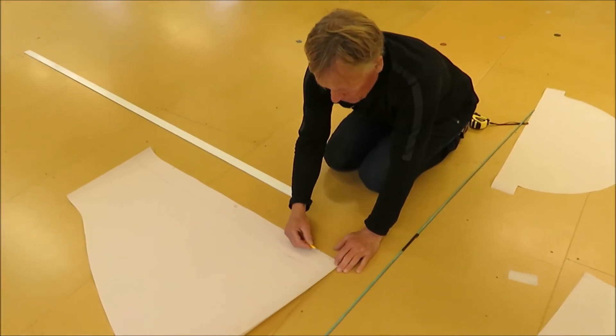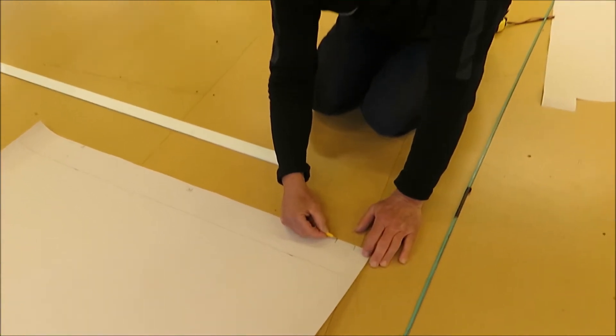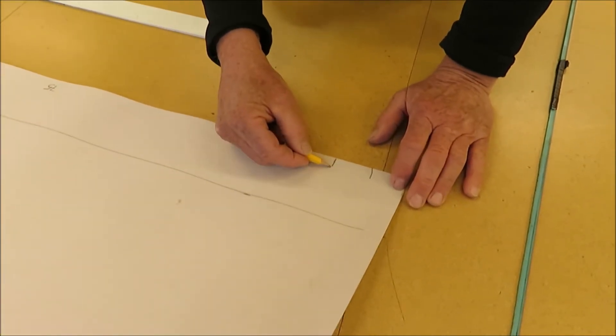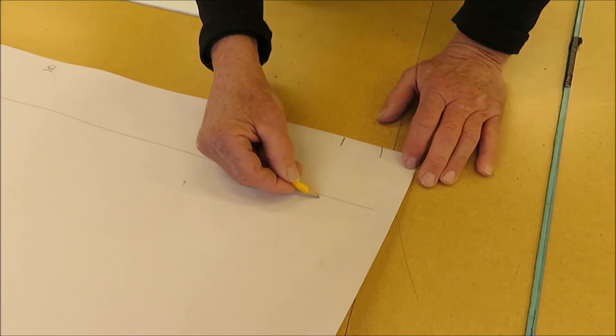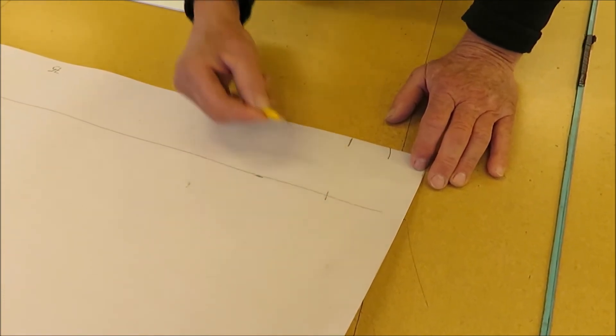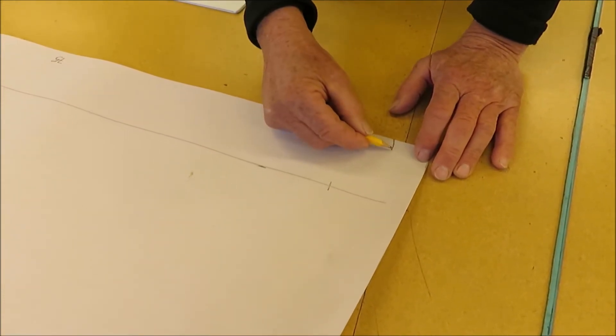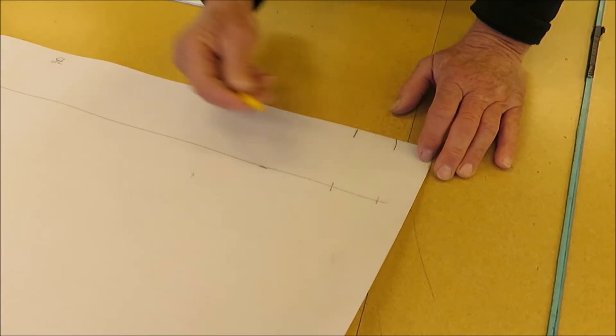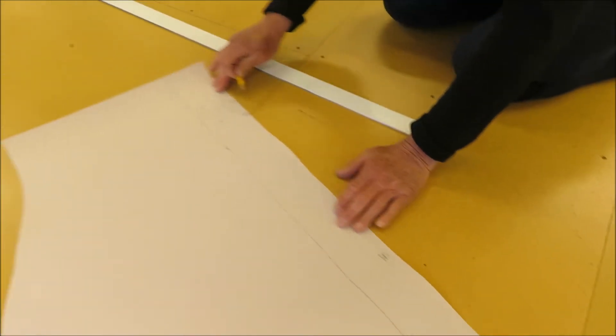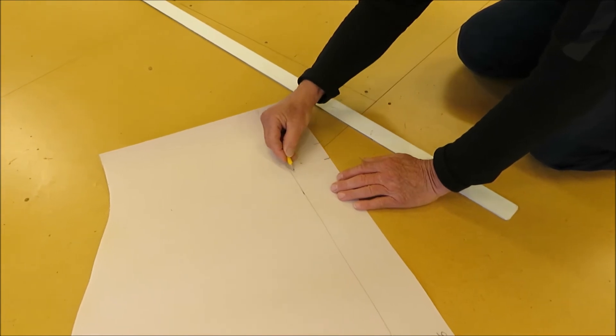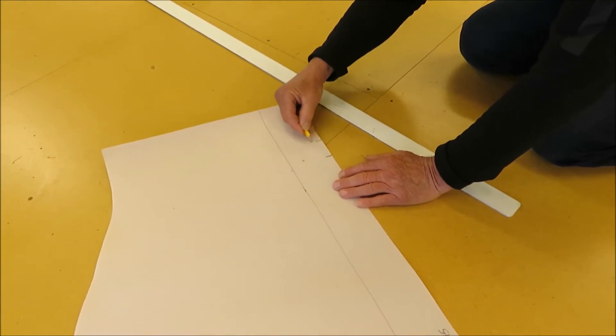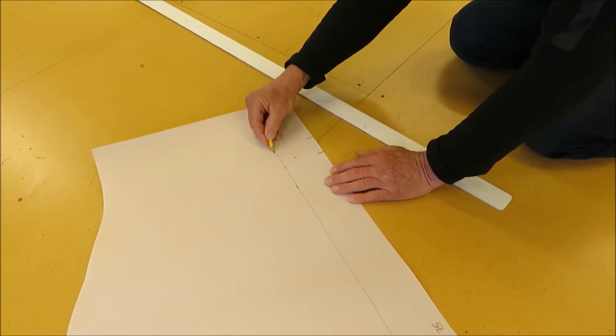Now move these marks up to the seam allowance line, and that one as well, and likewise on the other side. Like that and like that.